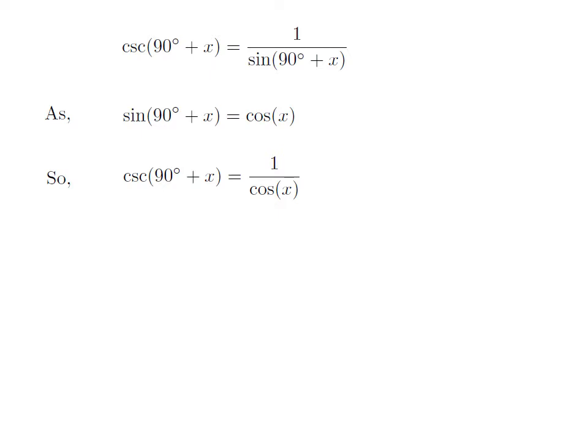So, cosecant of 90 degrees plus x is equal to 1 upon cosine of x. As 1 divided by cosine of x is equal to secant of x, cosecant of 90 degrees plus x is equal to secant of x.